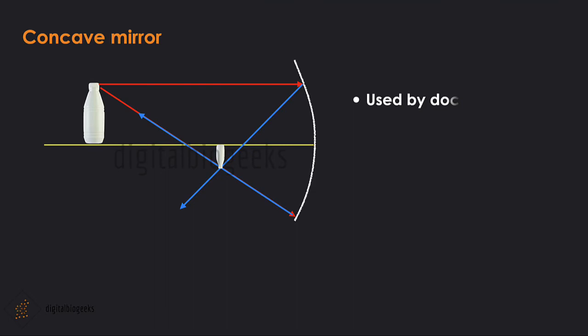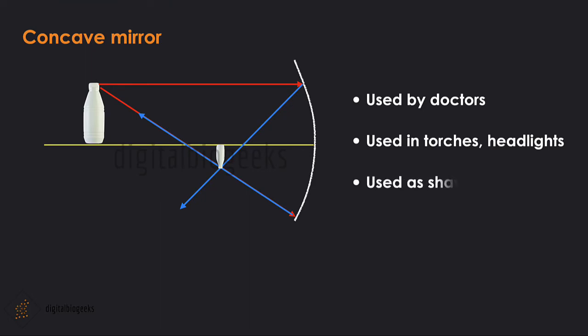Concave mirrors are used by doctors for examining the eyes, ears, nose, and throat. Dentists use concave mirrors to see an enlarged image of the teeth. The reflectors of torches and headlights of cars and scooters are concave. Shaving mirrors are concave mirrors, as the image formed is always erect and magnified when the object is placed close to the mirror.